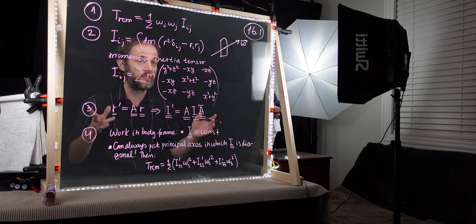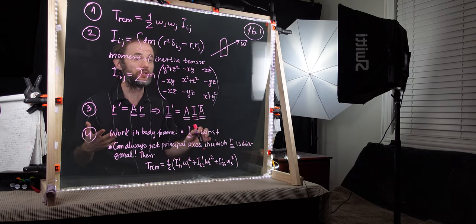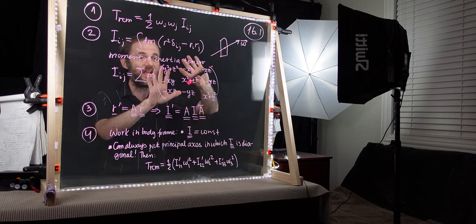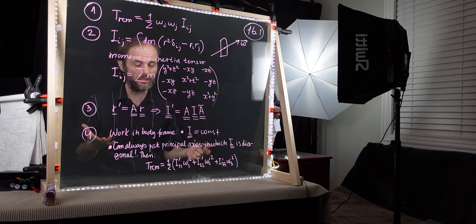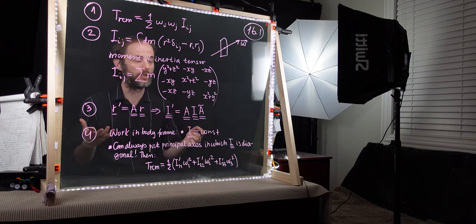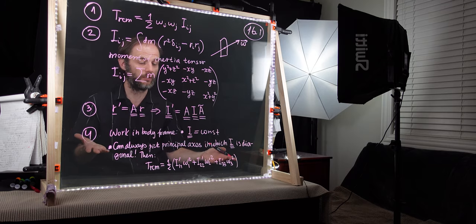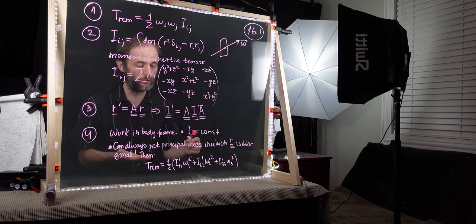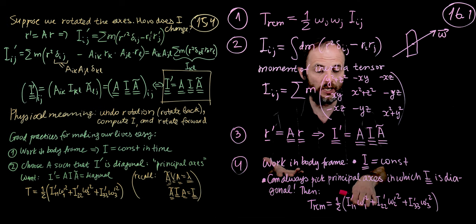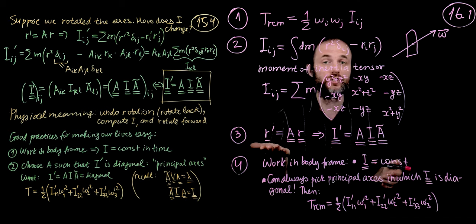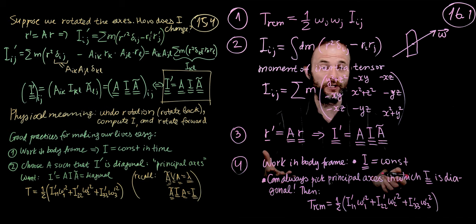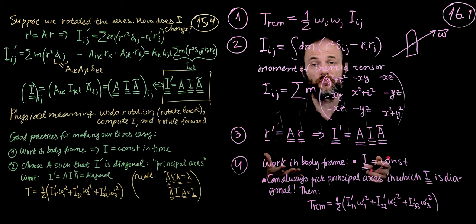You can always pick the principal axes in which the moment of inertia tensor is diagonal, so that only diagonal components are non-zero and everything off-diagonal is zero. In such principal axes, which always exist for a rigid body, we can write the kinetic energy in simplified form — since all off-diagonal components vanish — leaving only the sum of the three diagonal terms I_1, I_2, I_3 times their respective omega squared components. In the future, we will drop the primes and work in the body frame by default.